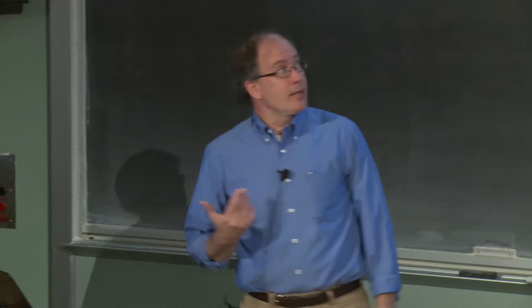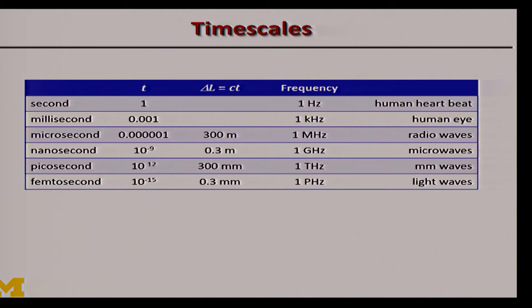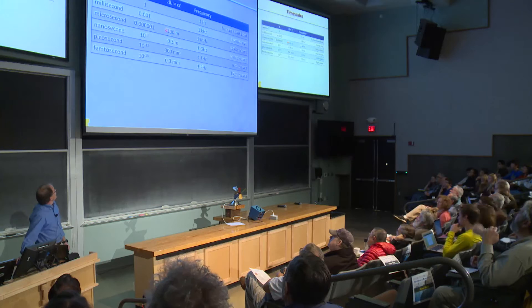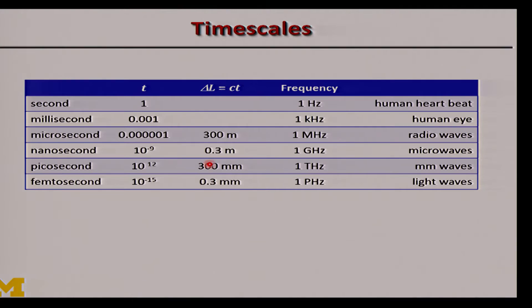The next timescale beyond a nanosecond is a picosecond, and where we really get to is femtoseconds, 10 to the minus 15 seconds. An important column here is the distance that light travels in each amount of time. At a microsecond, light travels 300 meters — three football fields. At a nanosecond, only 30 centimeters, about a foot. At a picosecond, 300 micrometers, and at a femtosecond, 0.3 micrometers. Keep those numbers in mind because they'll become important later.